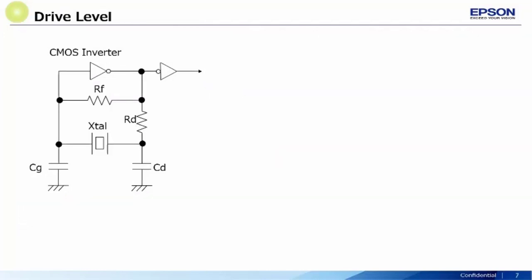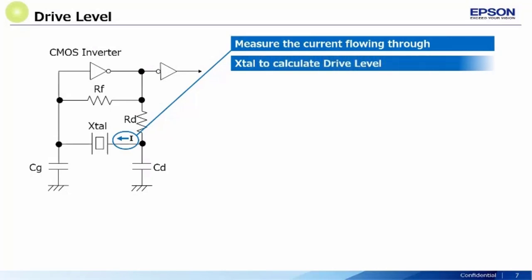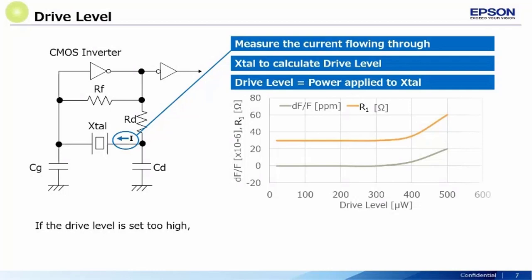Lastly, we come to the drive level. This is the amount of power consumed by the crystal while in use. Quartz crystals have a specific maximum value of drive level that influences the frequency of the oscillator. Exceeding the specified value could result in unstable oscillations, changes in operating frequency, and also affects the ESR. Drive level is calculated by measuring the drive current through the crystal and calculating it using the formula I² multiplied by the ESR.